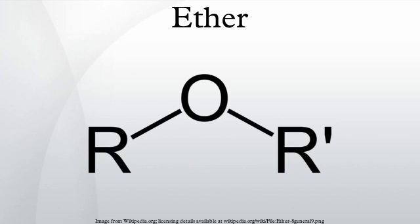Lewis bases: ethers serve as Lewis bases and Brønsted bases. Strong acids protonate the oxygen to give oxonium ions. For instance, diethyl ether forms a complex with boron trifluoride, i.e., diethyl etherate. Ethers also coordinate to Mg2+ center in Grignard reagents. Alpha-halogenation: this reactivity is akin to the tendency of ethers with alpha-hydrogen atoms to form peroxides. Chlorine gives alpha-chloroethers.